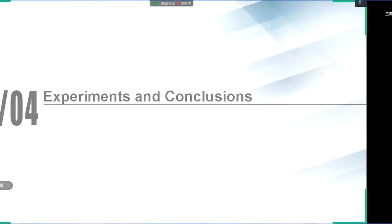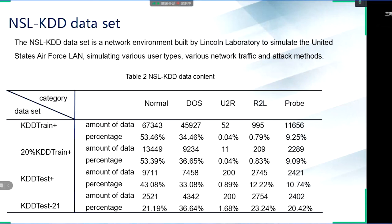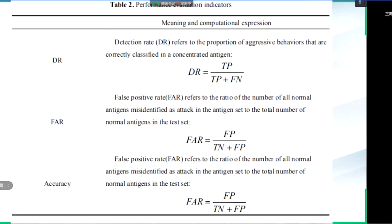I will now introduce the experiments. In order to verify the algorithm, we use the NSL-KDD dataset. The NSL-KDD dataset is a network environment built by Lincoln Laboratory to simulate the United States Air Force network, simulating various user types, various network traffic, and attack methods. The evaluation indicators used in the experiments are accuracy, detection rate, and false positive rate.